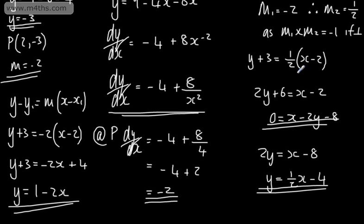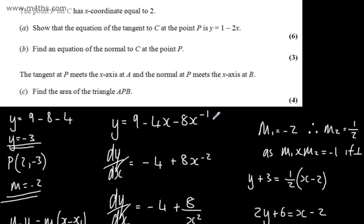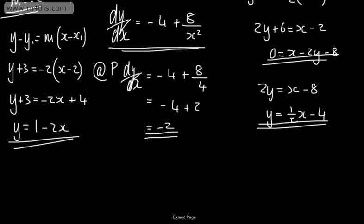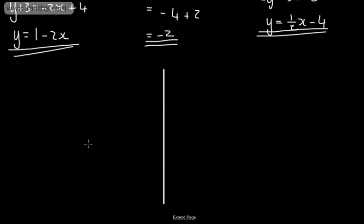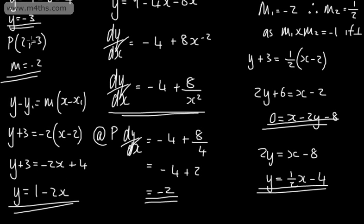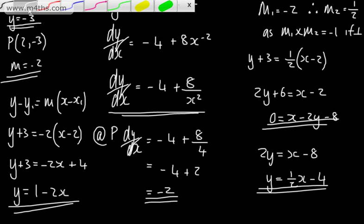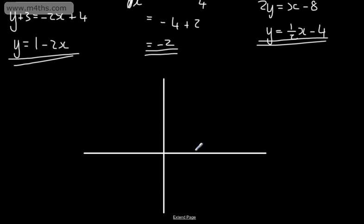For part C, the tangent at P meets the x-axis at A, and the normal at P meets the x-axis at B. We need to find the area of triangle APB. Drawing a quick sketch with the coordinate axes, we've established that point P has coordinates (2, -3), which we place on the diagram.